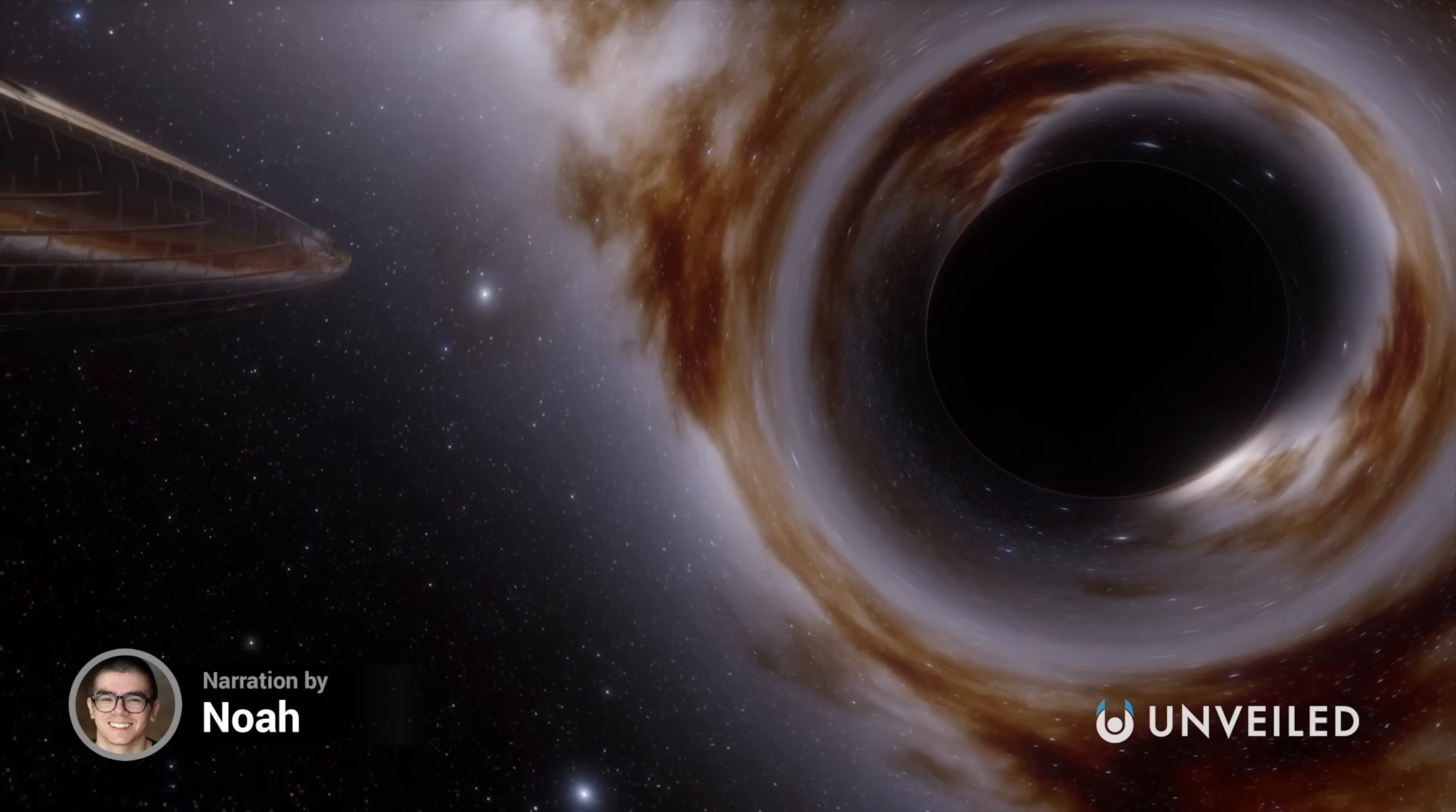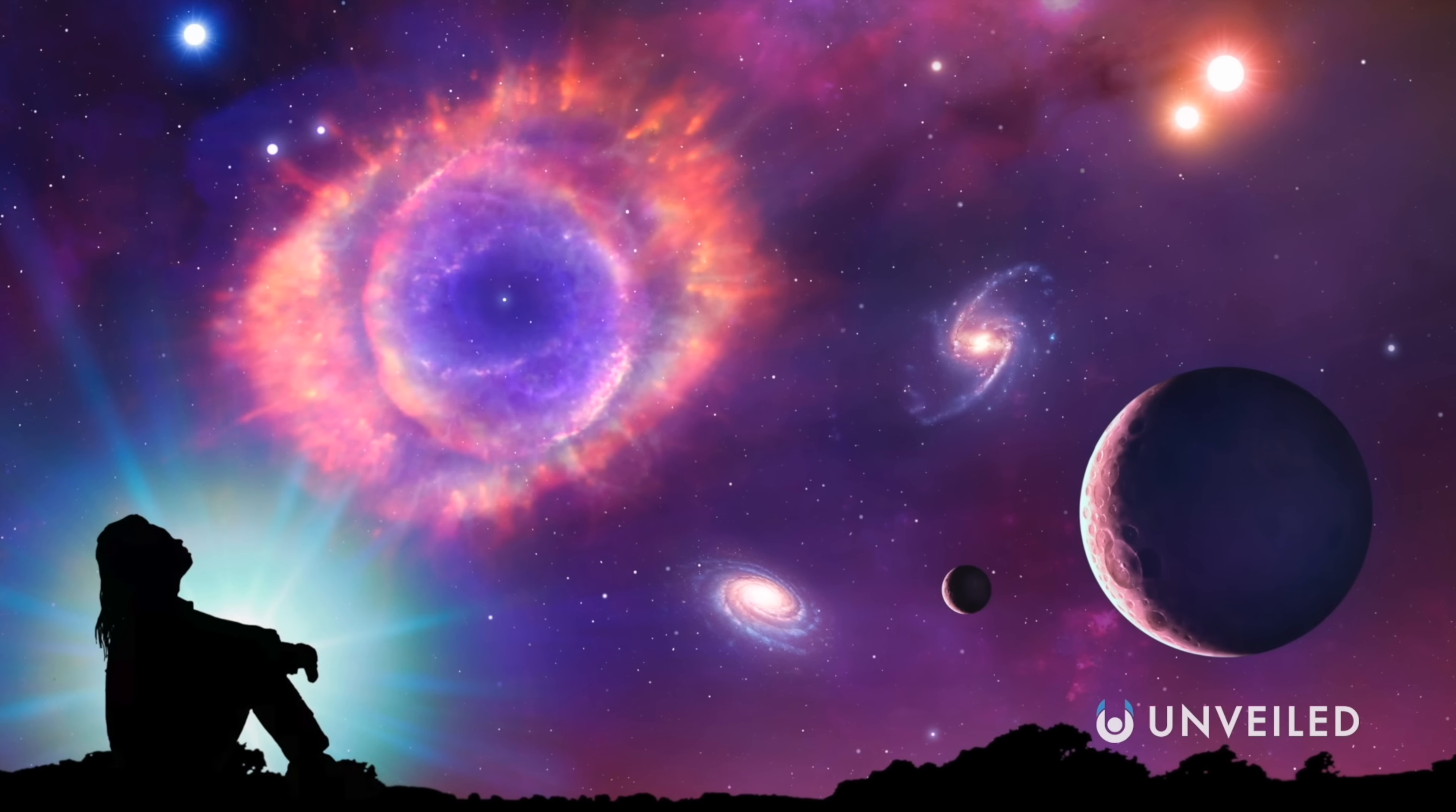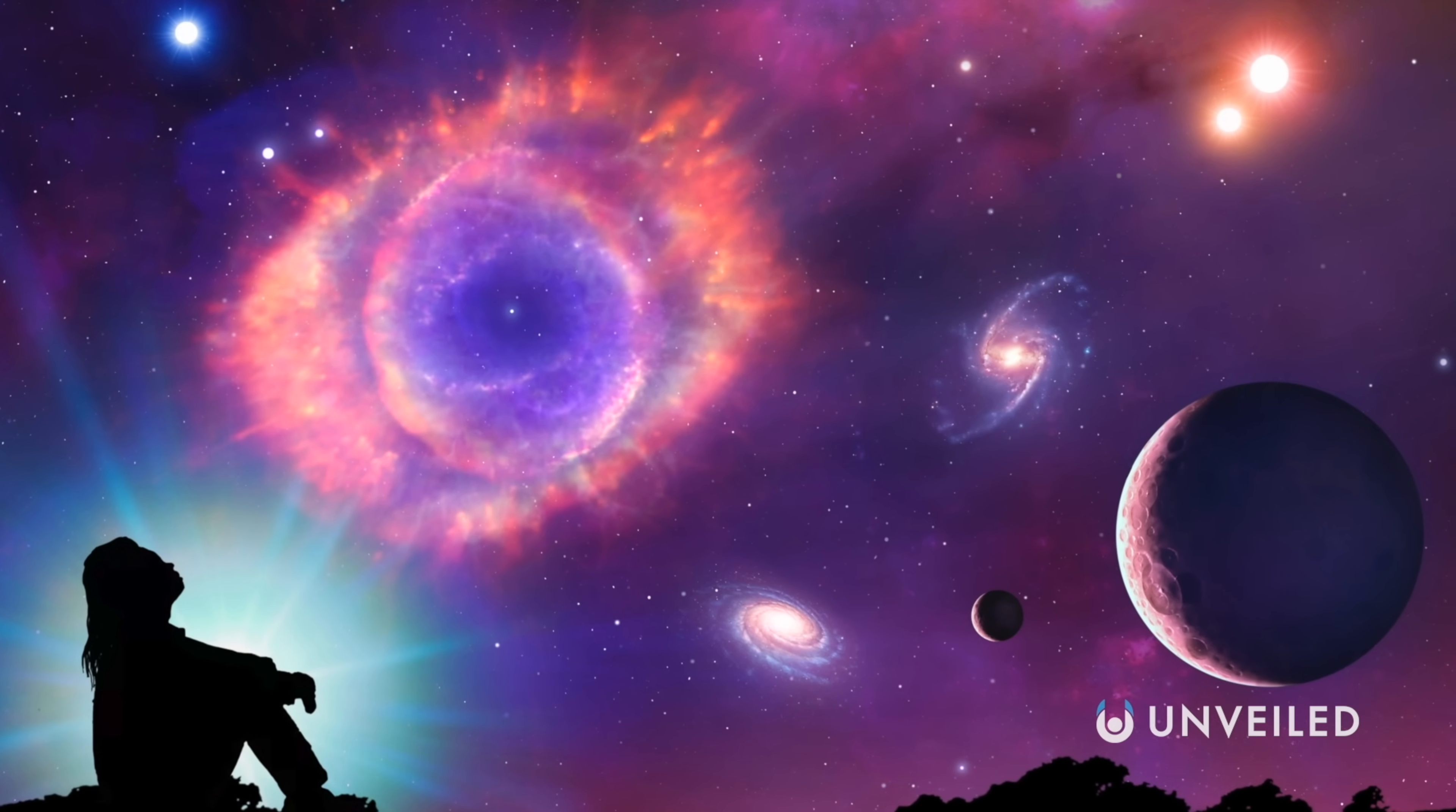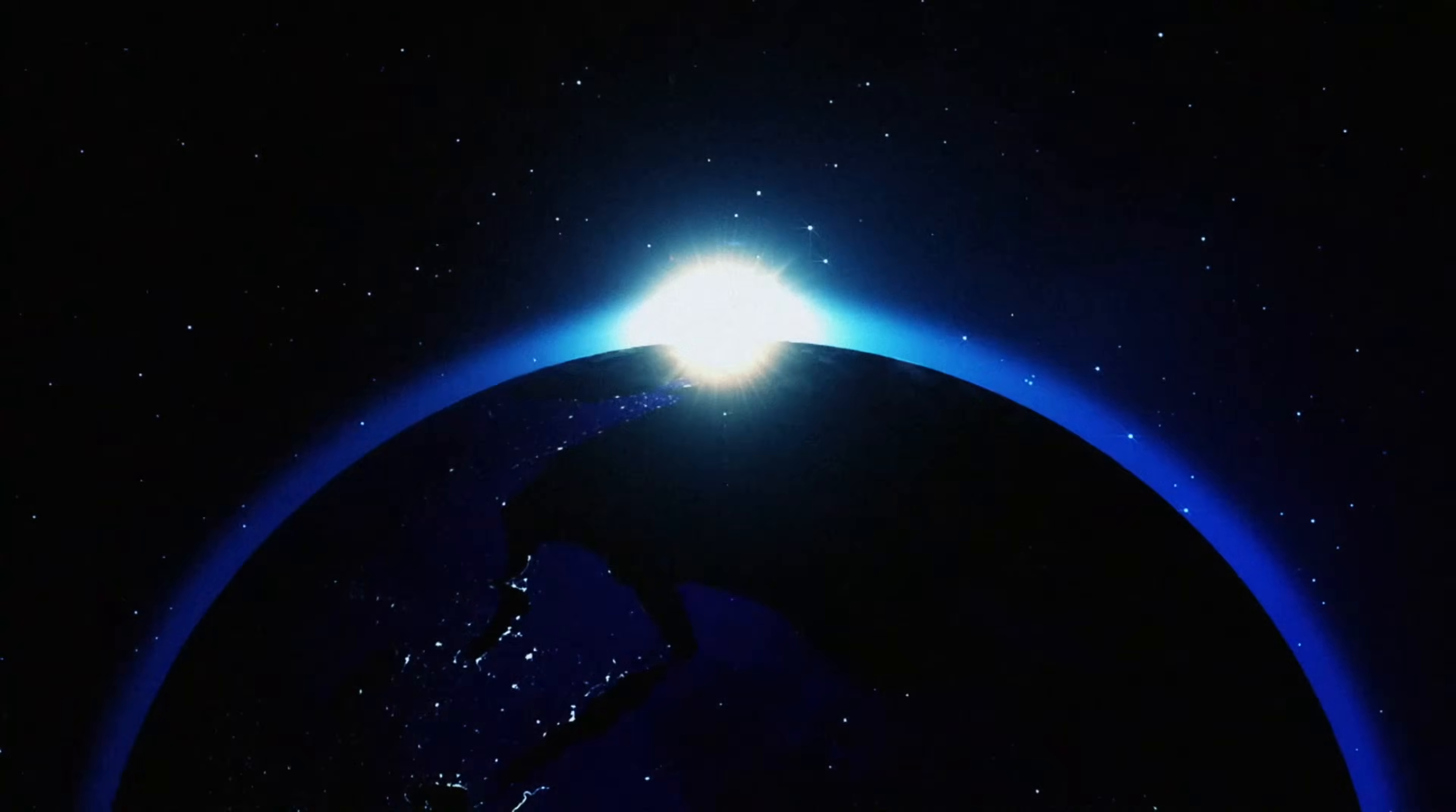Black holes are among the most mysterious objects in the universe, ready and willing to devour anything that gets too close to them. Luckily, the closest black hole to us is more than a thousand light-years away. But what would happen if one showed up actually on this planet? This is Unveiled, and today we're answering the extraordinary question, what if a black hole appeared on Earth?